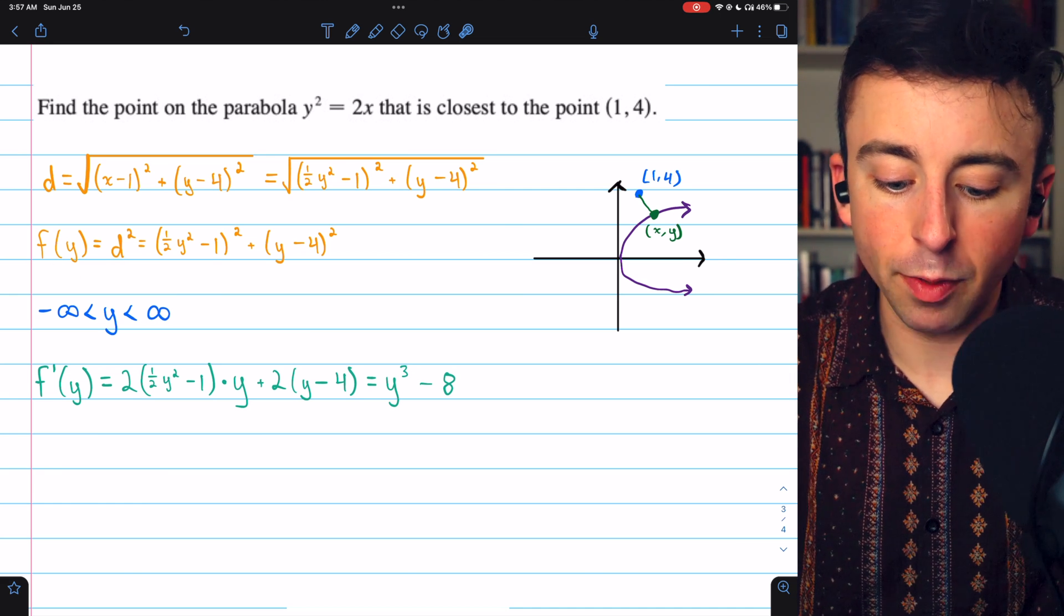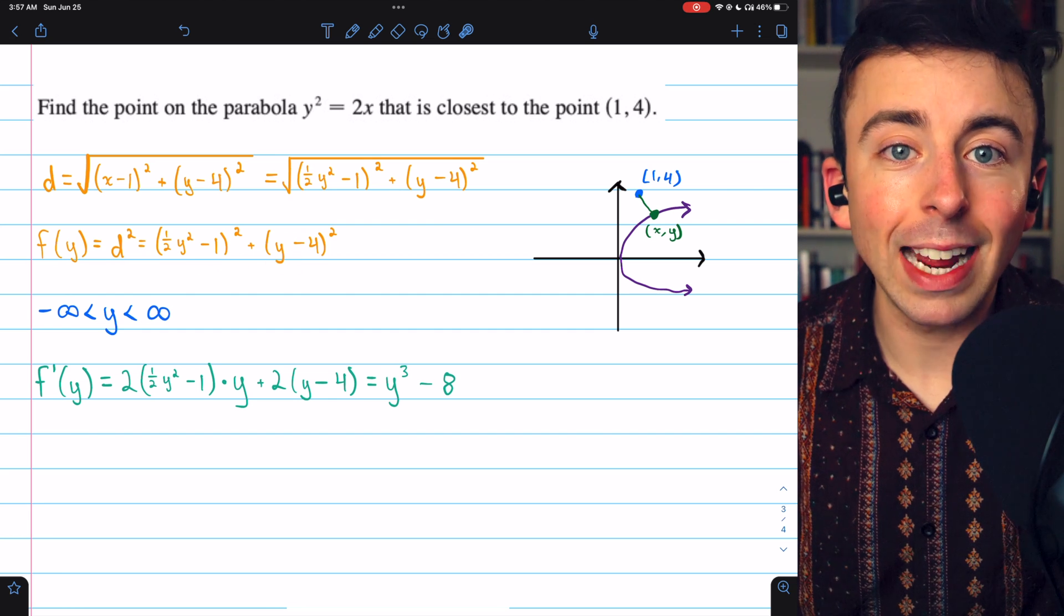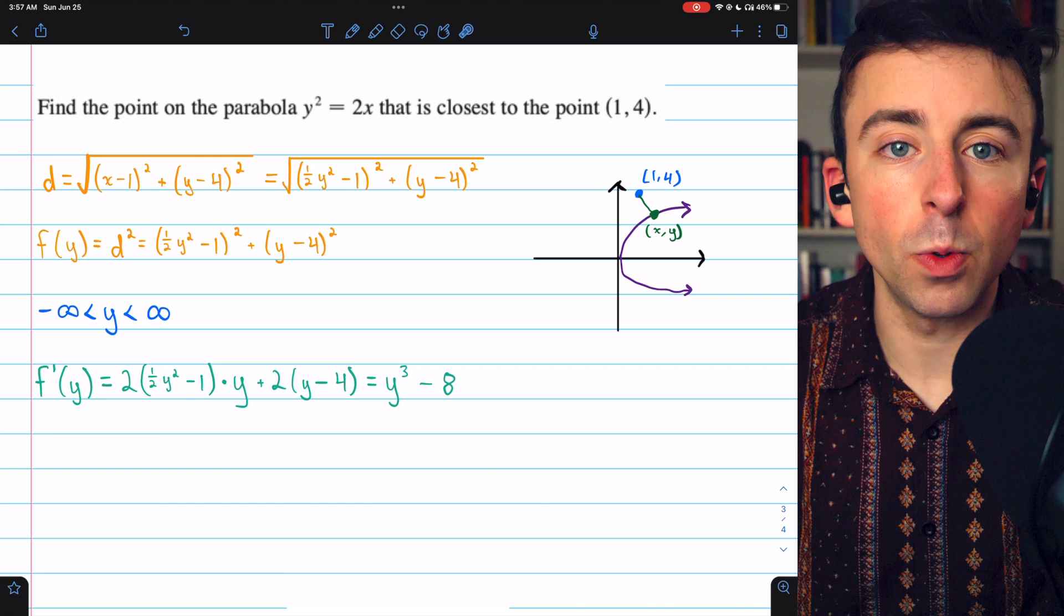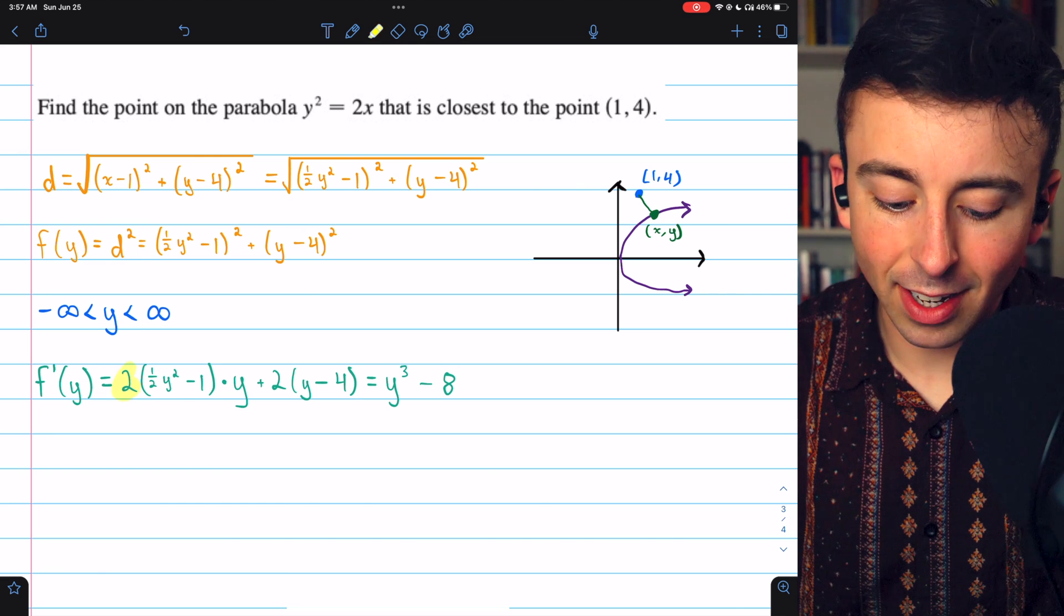We'll take the derivative of f of y, and then we can find our critical points. To take the derivative of this, we're going to have to use the chain rule, and that gets us here.